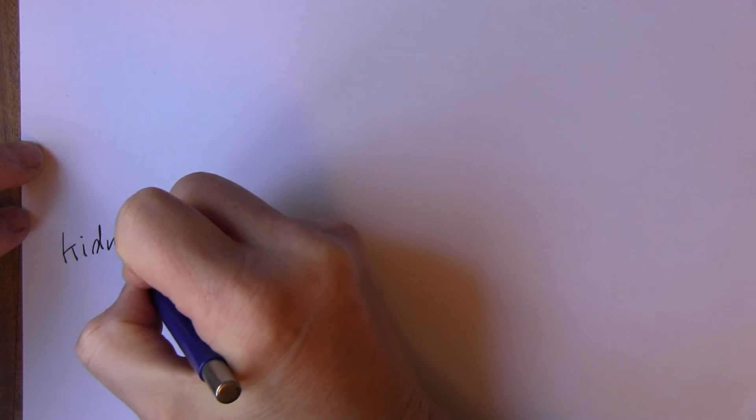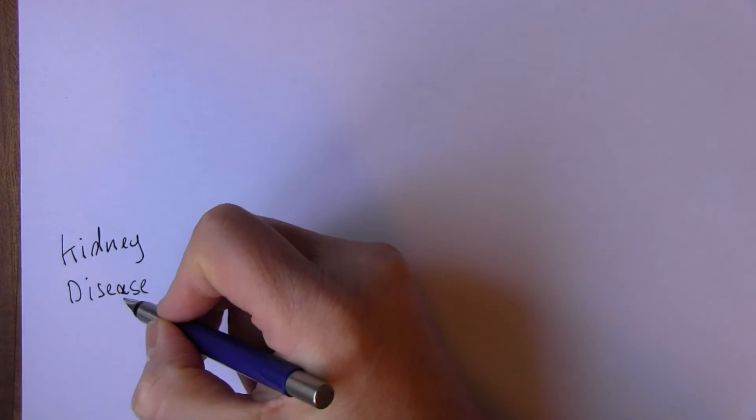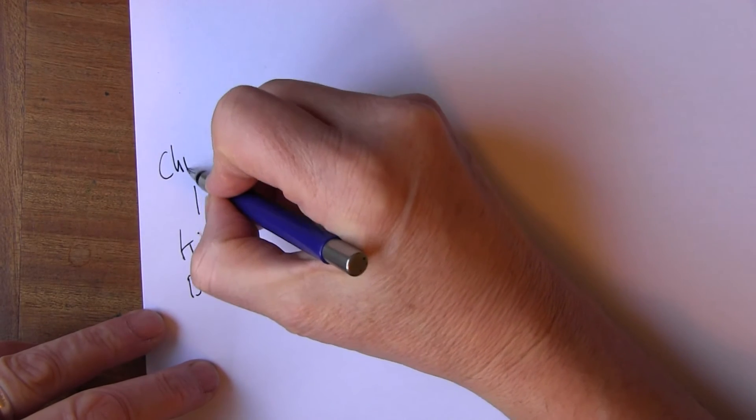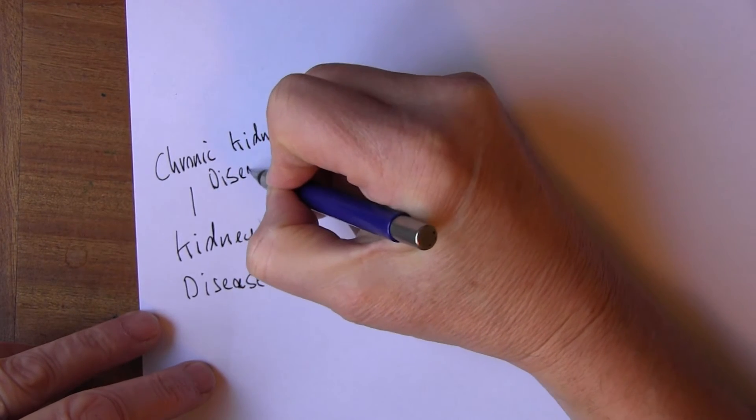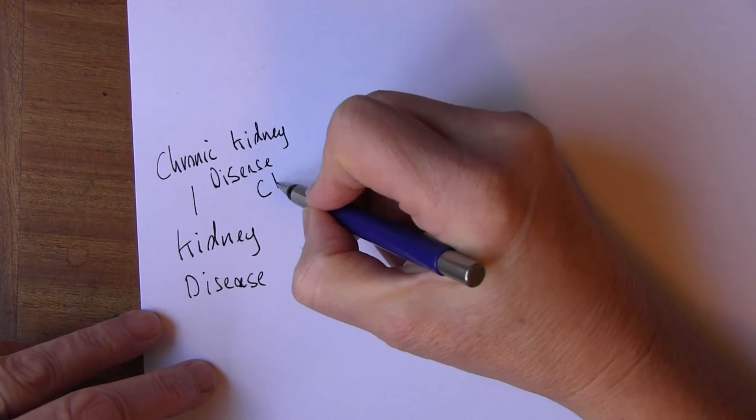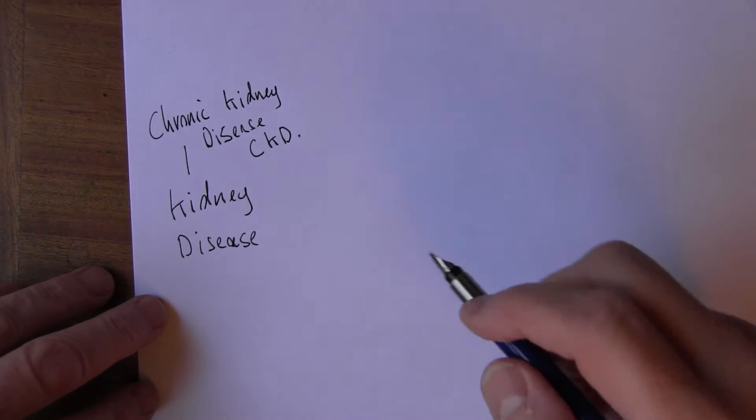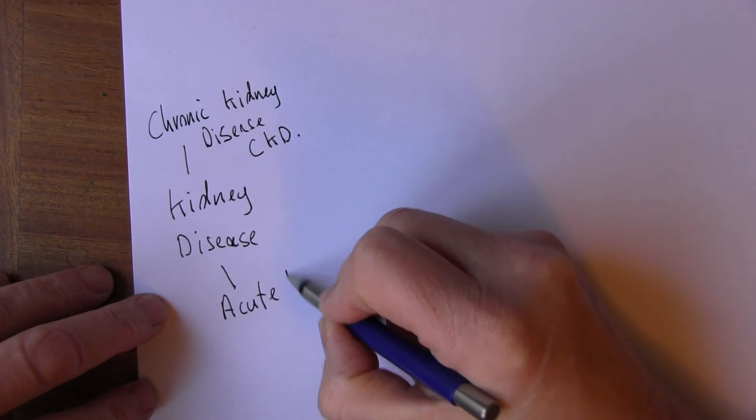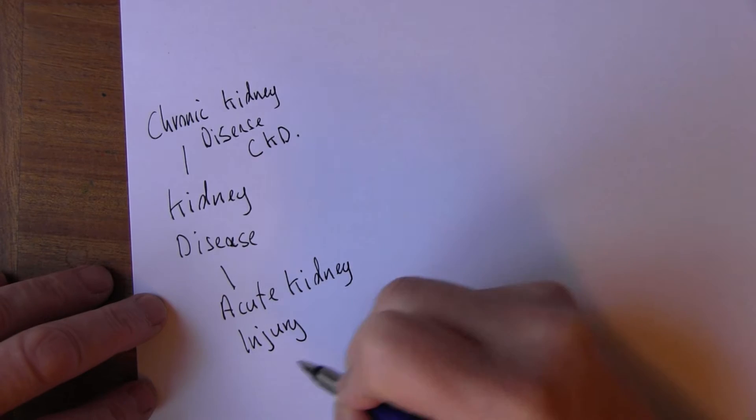I'm just going to try and generate a bit of a mind map about kidney disease. Now kidney disease can be chronic kidney disease, and we call this CKD these days, chronic kidney disease. But there can also be acute kidney disease which we now call acute kidney injury or AKI.